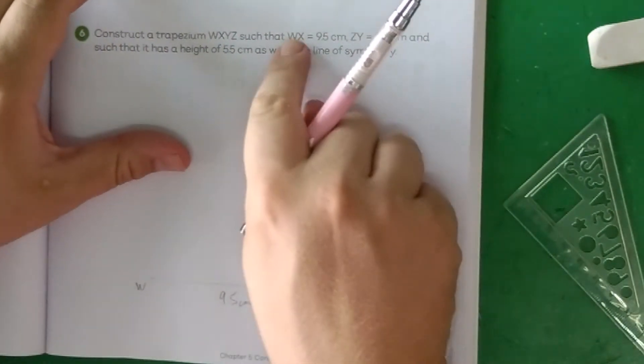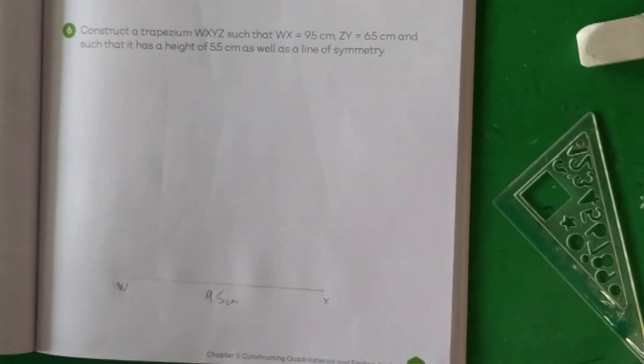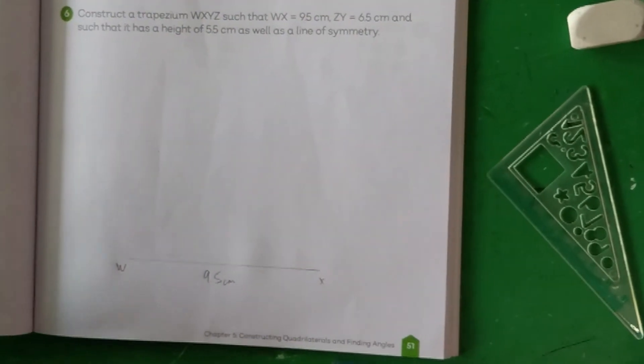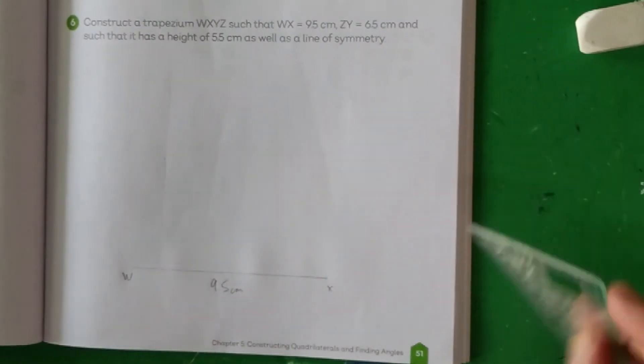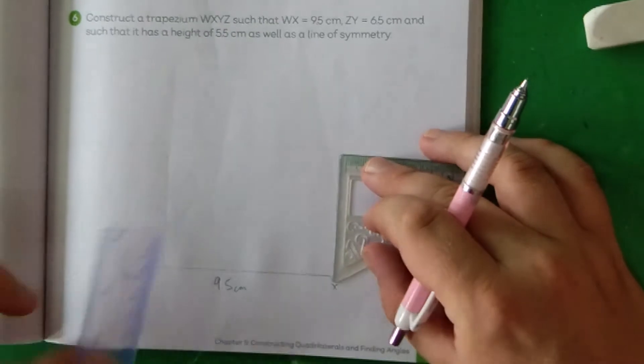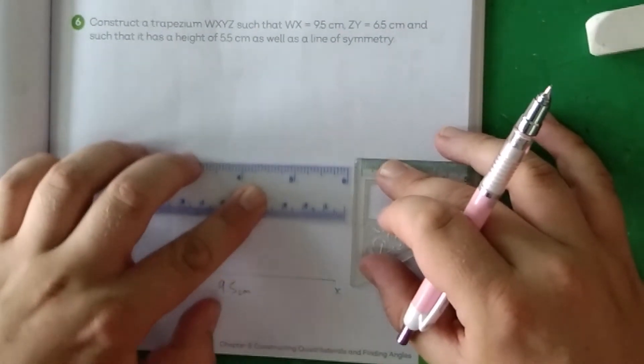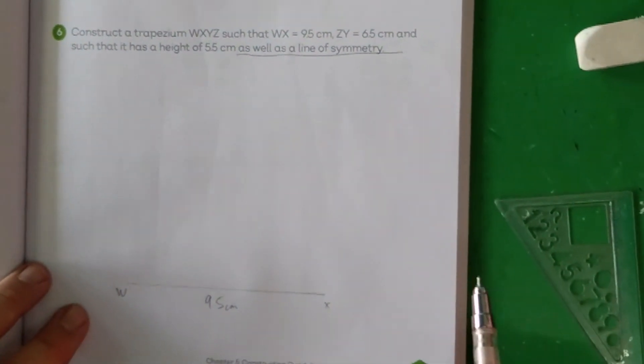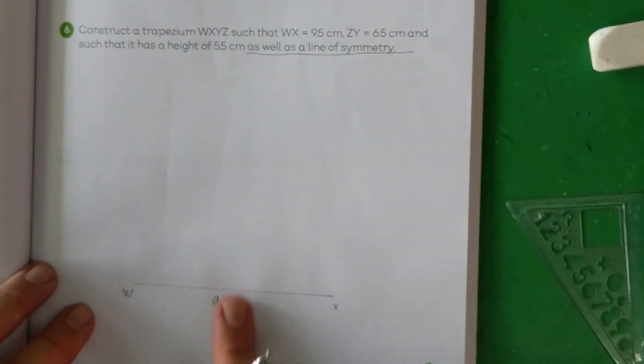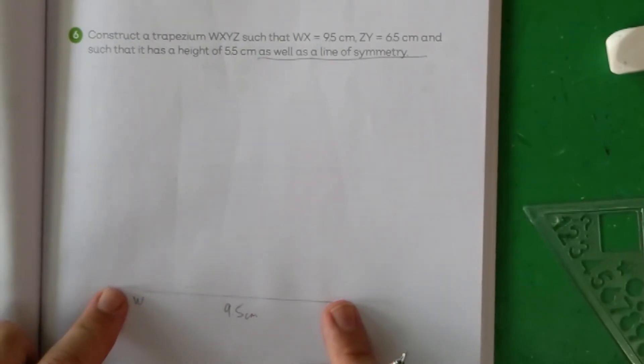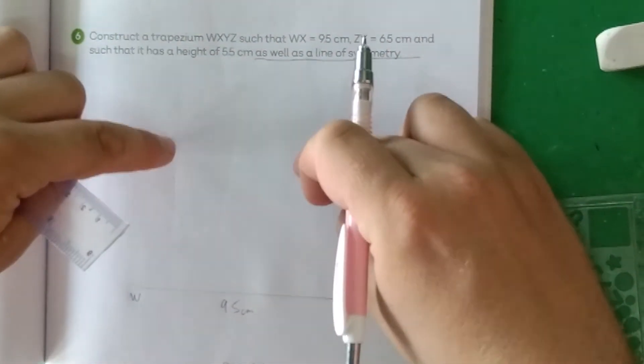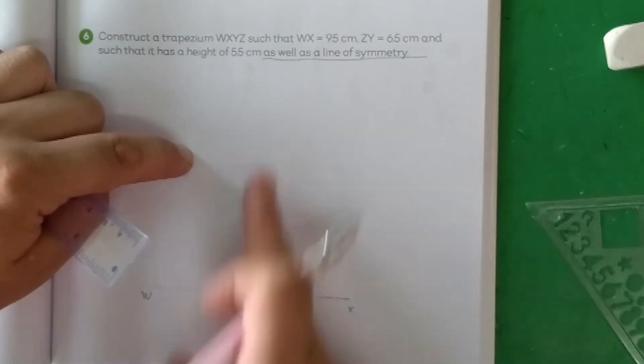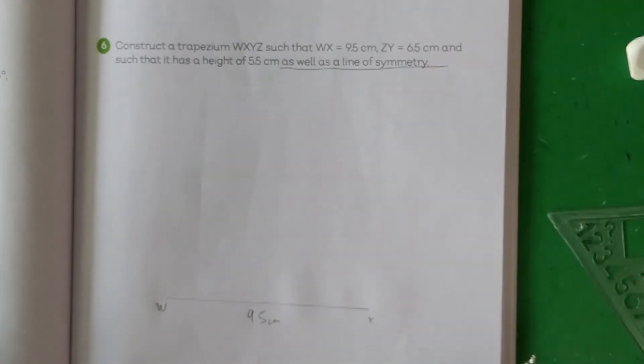Let me just read the full question. Construct a trapezium WXYZ such that W and X equal 9.5 centimeters, Z and Y equal 6.5 centimeters. Z and Y doesn't actually meet this line. And such that its height is 5.5 centimeters. First thing we need to remember is that these two lines here are going to be parallel. This would have been helpful if I'd made this actually parallel with the bottom of the page, but it's not. For doing this, we can either... Well, one way we can do it is the technique where we take a set square, measure the length of a line we want and then we can just bring it up and measure a parallel line like that.